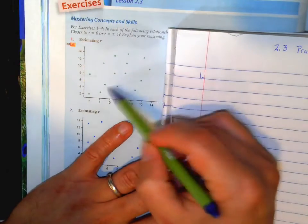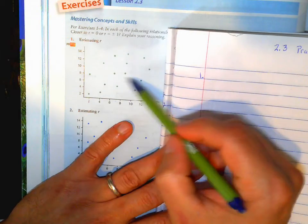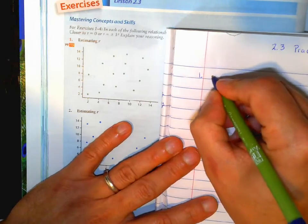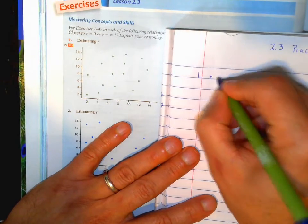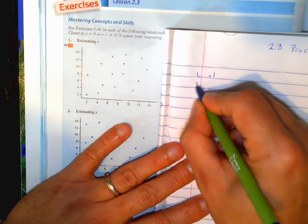So this is pretty scattered, so it's pretty close to 0. Maybe it's slight positive, so we'll say maybe 0.1, let's say.